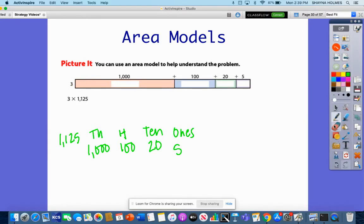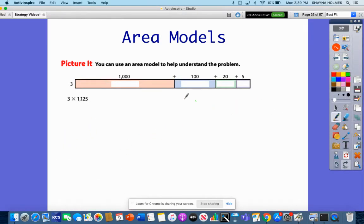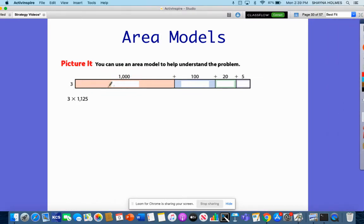We're going to be multiplying these in steps. First, I'm going to multiply 3 times 1,000. Three times 1,000 is going to give me 3,000. I'm going to put that there.